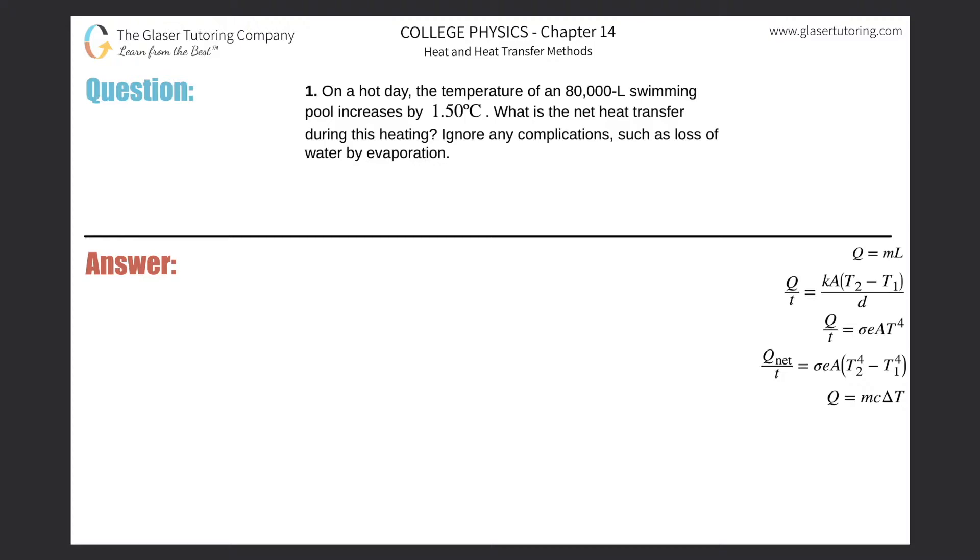Number one: on a hot day, the temperature of an 80,000 liter swimming pool increases by 1.5 degrees Celsius. What is the net heat transfer during this period, ignoring any complications such as loss of water by evaporation?